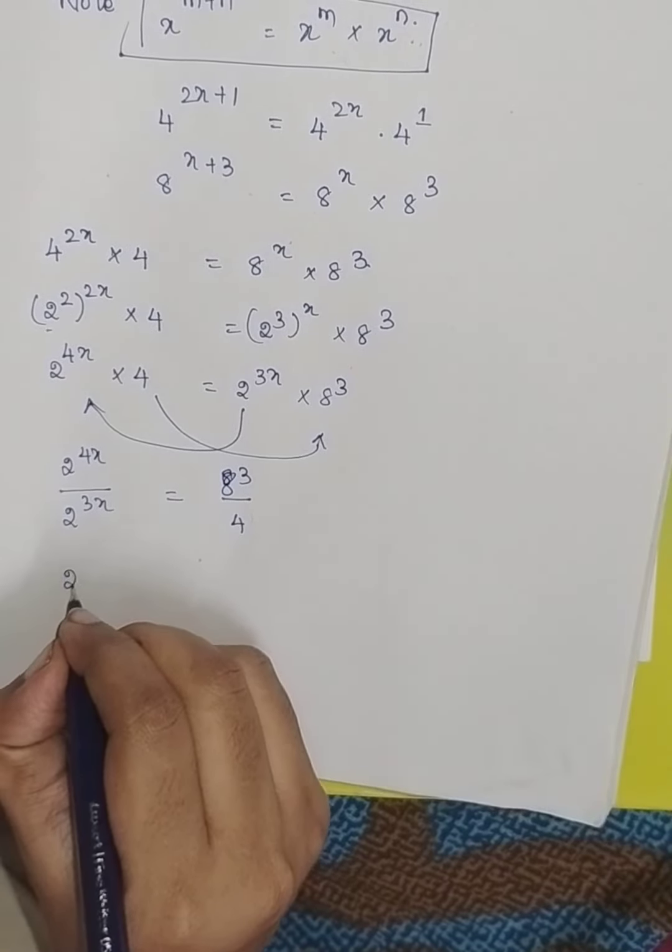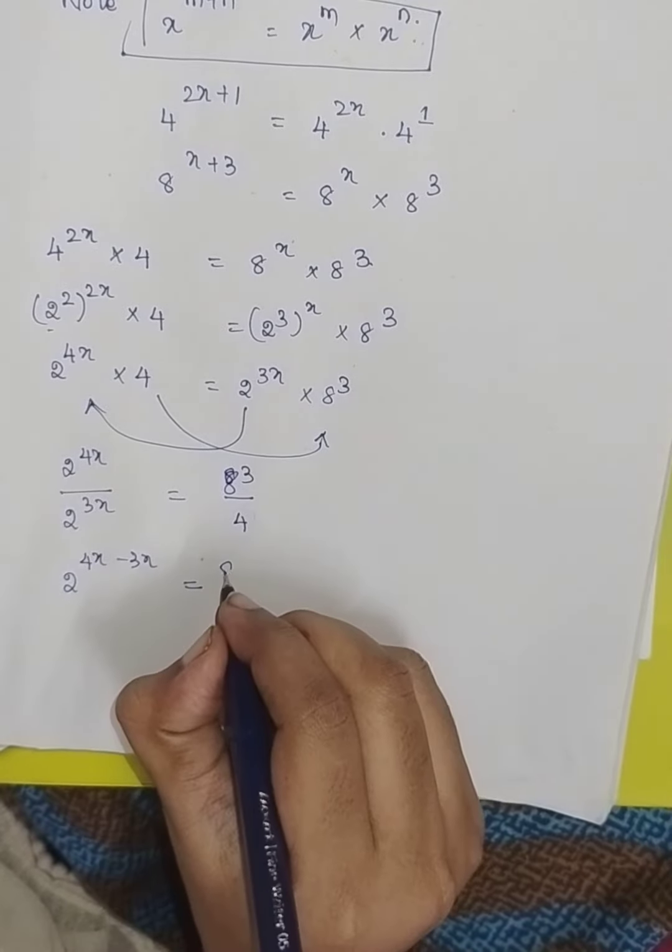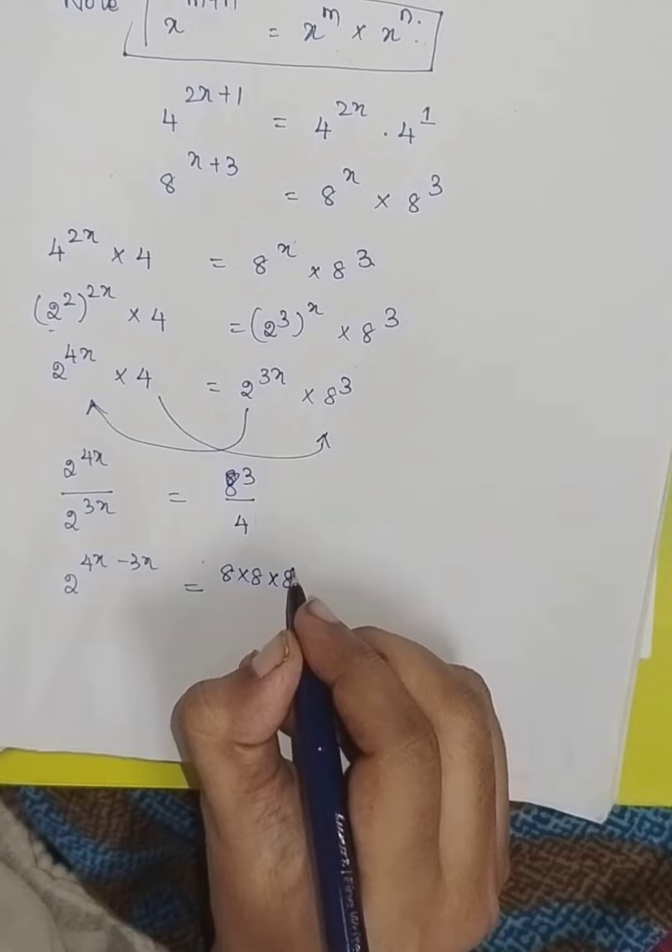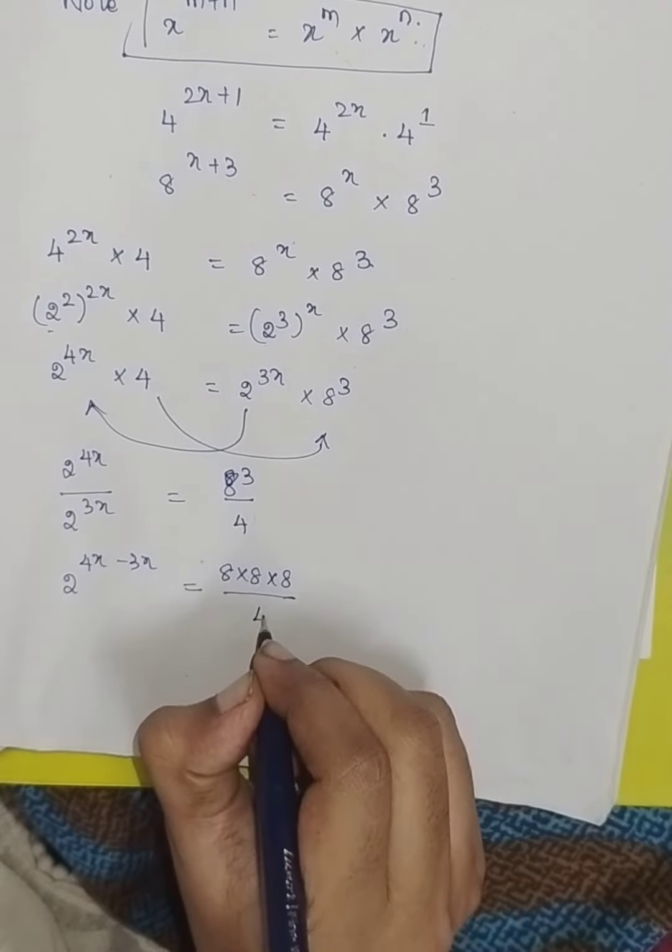So, 2 power 4x minus 3x which is equal to 8 into 8 into 8 divided by 4.